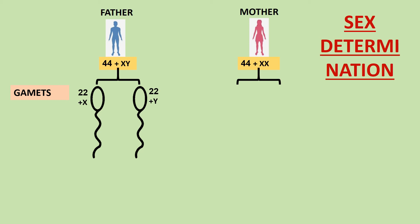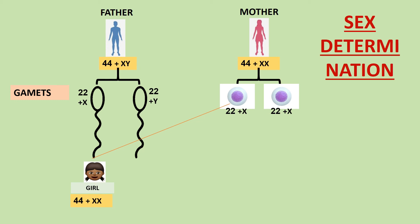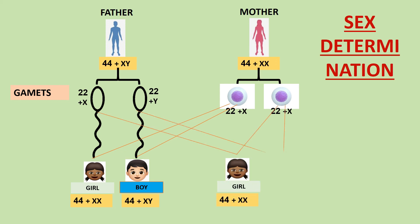The mother produces both ova of the same type: 22 plus X chromosome. When the 22 plus X sperm cell from the father fuses with the 22 plus X ovum from the mother, it forms a girl child having 44 plus XX — a total of 23 pairs. When the 22 plus Y sperm from the father fuses with the mother's 22 plus X ovum, it forms a baby boy having 44 plus XY — also a total of 23 pairs. So from the mother X and from the father Y chromosome fuse to form a baby boy.